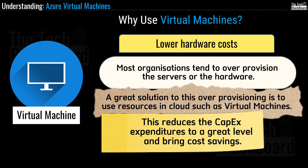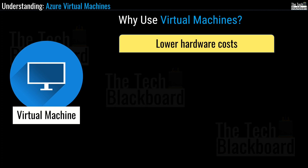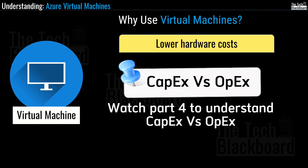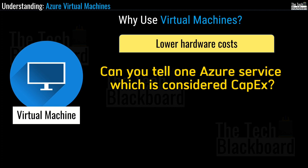When we say virtual machines eliminate upfront cost, we are talking about reducing or eliminating CapEx, or capital expenditure. Always remember, cloud works on the concept of operational cost or OpEx, also known as pay-as-you-go. CapEx versus OpEx is quite a critical concept for AZ-900 — watch part 4 of this series for details. As a side note, can you name one Azure service that comes under CapEx and not OpEx? Share your answers in the comments — the answer will be revealed towards the end of this video.